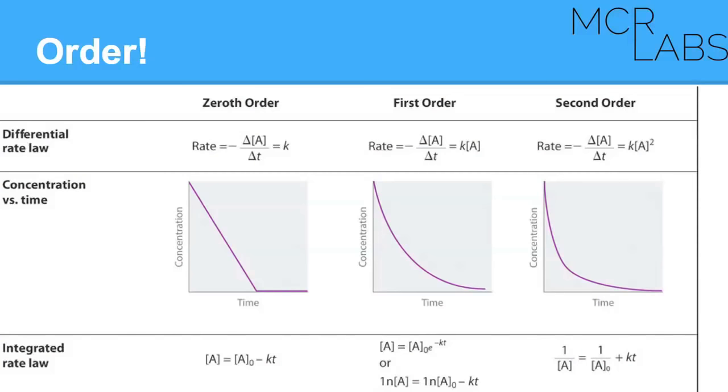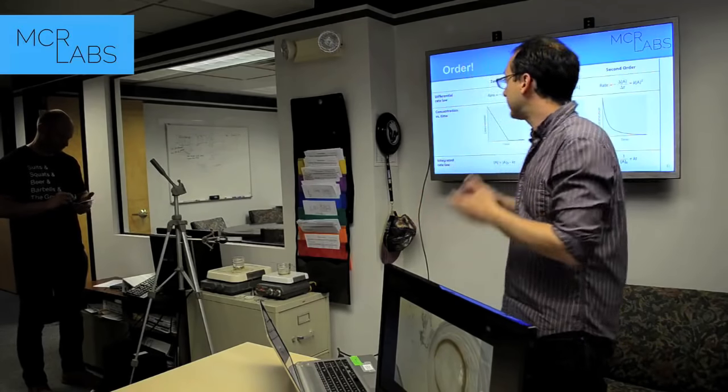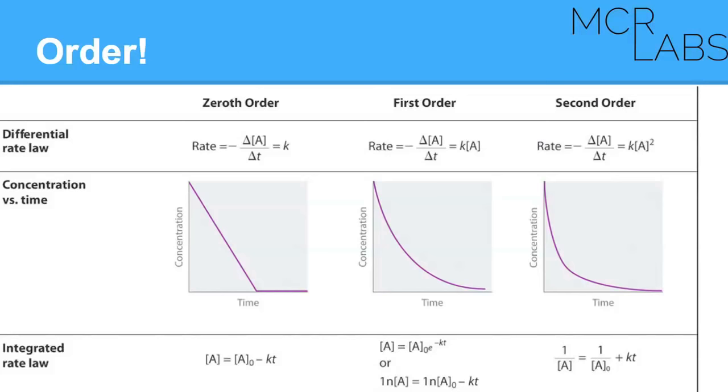Do you know what temperature that happens at? It'll happen at least a little bit at every temperature — the point is to control it. A chemical reaction is when a molecule becomes a different molecule, two molecules become a third, or one molecule falls apart into two. We have a THCA molecule and it falls apart. People have done a lot of experiments to figure out what makes it go faster or slower and how this reaction behaves.